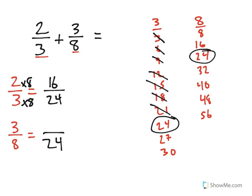Now we'll do the same process with the bottom. How did I go from 8 to 24 with multiplication? Well, 8 times 3 is 24, so I need to multiply the top by 3 as well. 3 times 3 is 9.